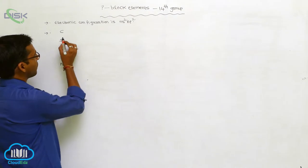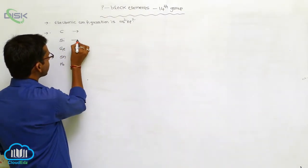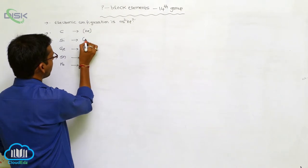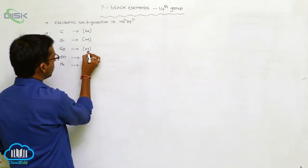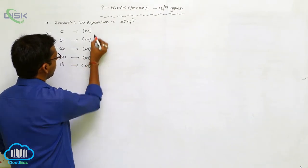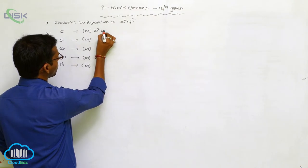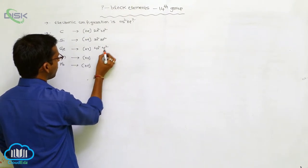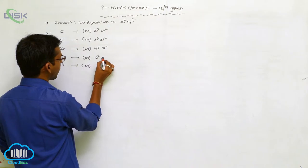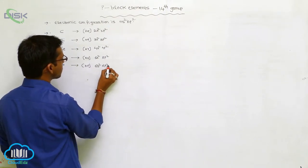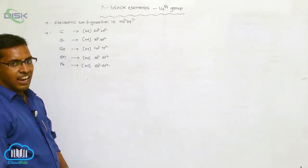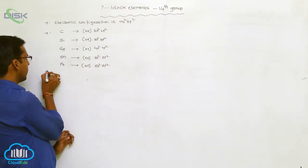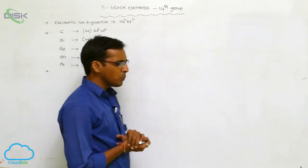The electronic configurations of the 14th group elements are: Carbon — 2s2 2p2; Silicon — [Ne] 3s2 3p2; Germanium — [Ar] 4s2 4p2; Tin — [Kr] 5s2 5p2; Lead — [Xe] 6s2 6p2.